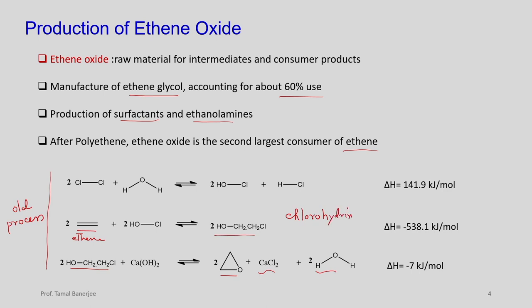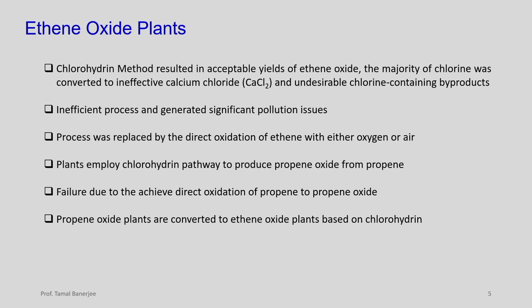The chlorohydrin process gives acceptable yields of ethylene oxide, but most chlorine is converted to ineffective calcium chloride and undesirable chlorine-containing byproducts. It is an inefficient process that generates significant pollution issues. Chlorohydrin plants for propene oxide can be converted to ethylene oxide plants with minimal changes — just the raw material changes.